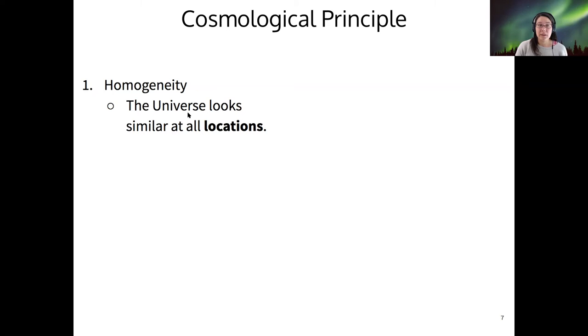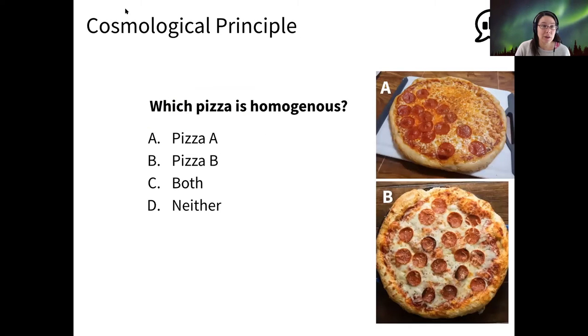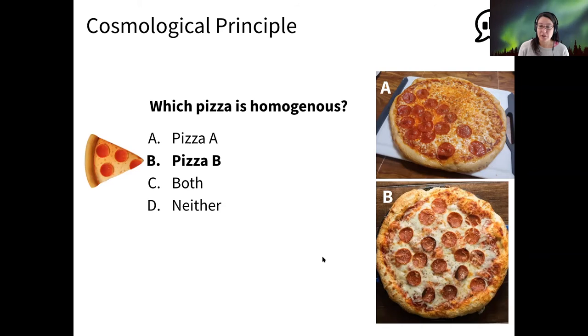So the first is homogeneity, meaning that the universe looks the same at all locations. As an example, let me ask you which of these two pizzas is homogenous. Yeah, I see the most votes for pizza B, which is also what I had in mind.